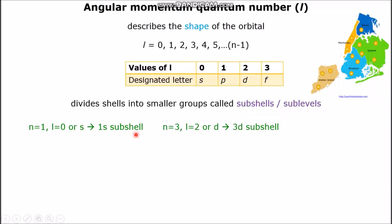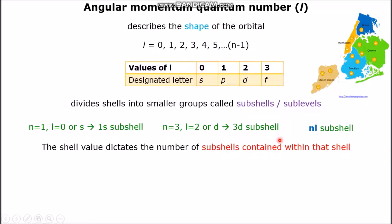If the electron is in the third shell, present in sub-shell D, then you simply name the sub-shell as the 3D sub-shell, and so forth. It is always named as the NL sub-shell. N is replaced with the value of the electron shell, whereas L is replaced with the letter code of the sub-shell of a given L value. Also, the value of the electron shell equals the number of sub-shells within that electron shell.